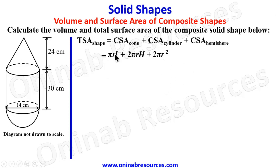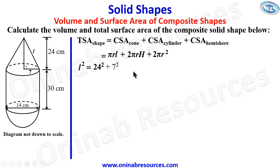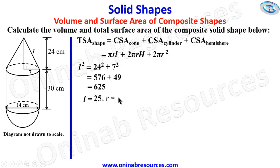We need to calculate the slant height L of the cone. The radius is 7 cm and the vertical height is 24 cm, which is perpendicular to the radius. Using the Pythagorean theorem: L² = 24² + 7² = 576 + 49 = 625, so L = √625 = 25 centimeters. The slant height is 25 cm.